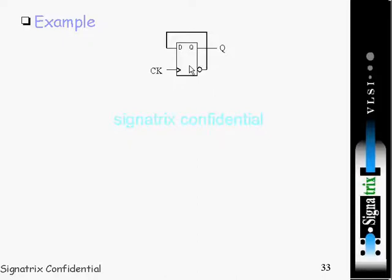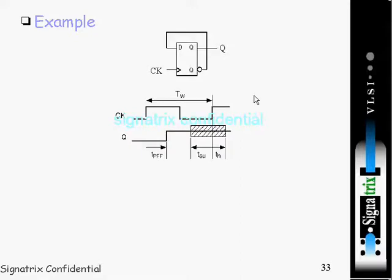Next, this is a timing diagram for this circuit. This is our clock, clock period which is represented as T_W. This is the output. So from this positive edge of the clock to this rising edge of Q, the delay between these two is nothing but the propagation delay of flip-flop.